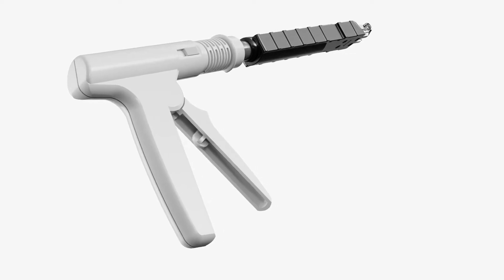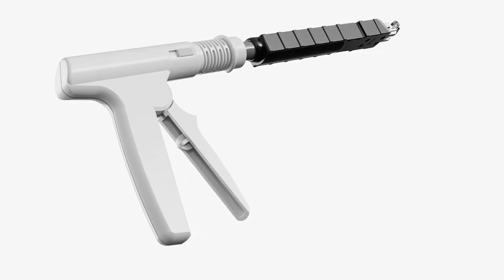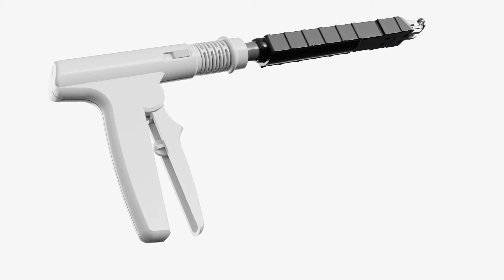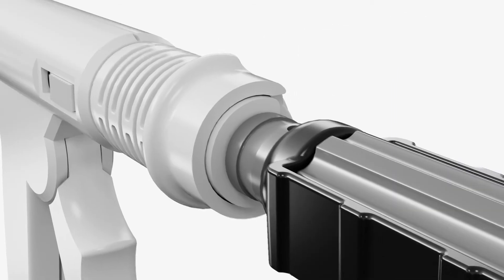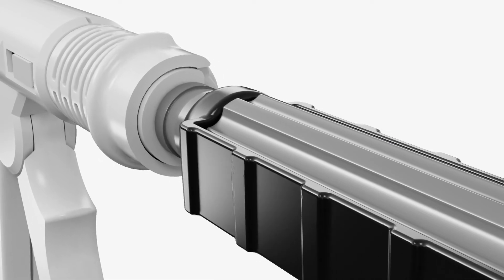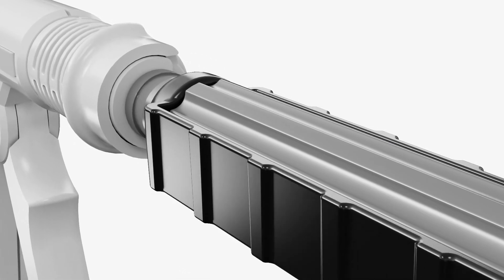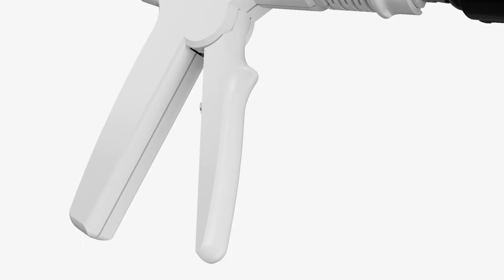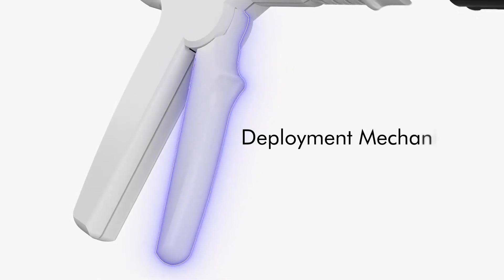The Connections TR Tendon Repair System is a permanent implant intended for the repair of lacerated tendons of the hand and wrist. The implant is provided preloaded into an implant mechanism and supplied with a deployment mechanism to facilitate intraoperative placement.